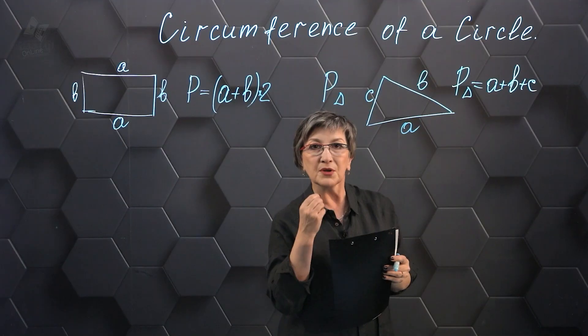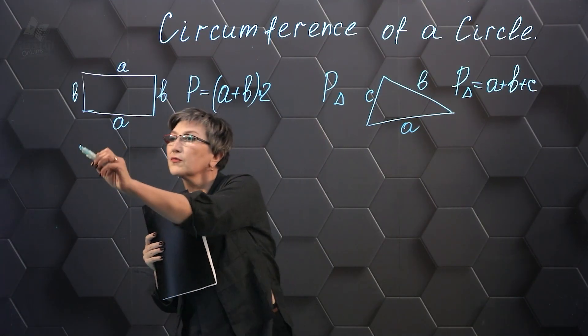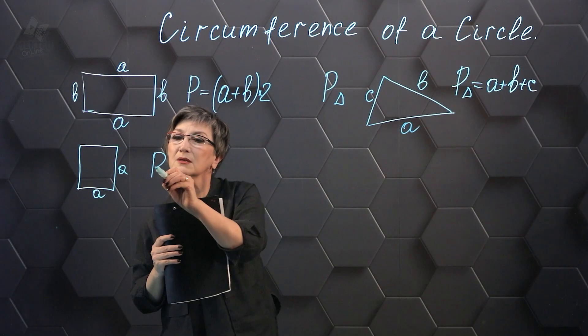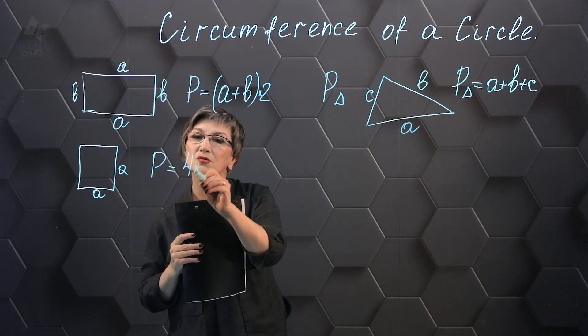If we're talking about the perimeter of a square, in a square the lengths of all the sides are equal and so the perimeter is 4 × A.